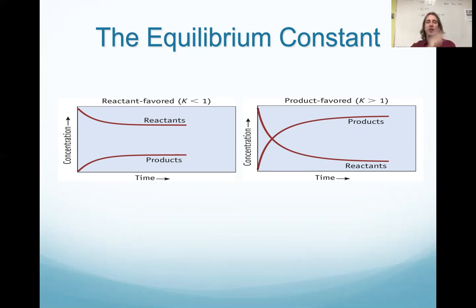If something is reactant favored, we say that this italicized K is less than one. And really when we say equilibrium constant, it is just a number. That number tells us for this reaction, do we expect to see a lot of products or do we expect to see lots of reactants? It's kind of a gauge or a tool we can use to think about, I'm going to mix this stuff, what do I expect to see happen?